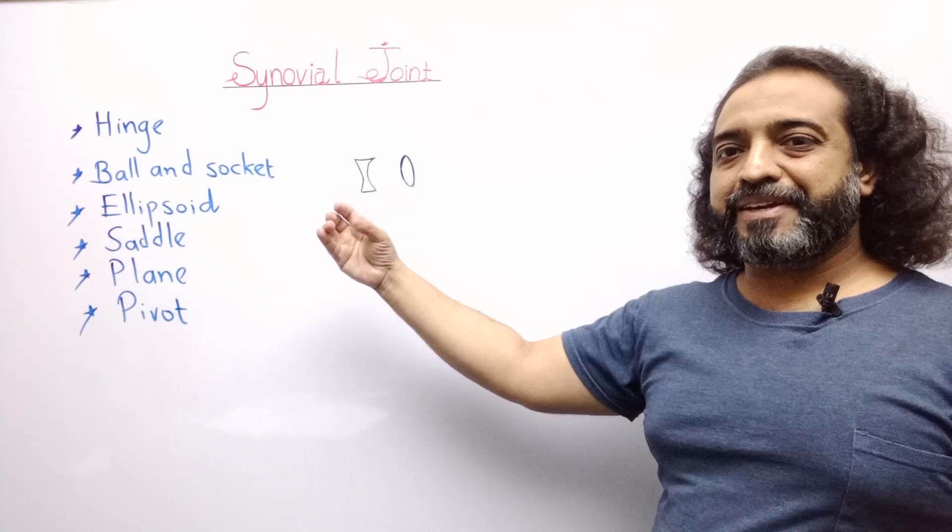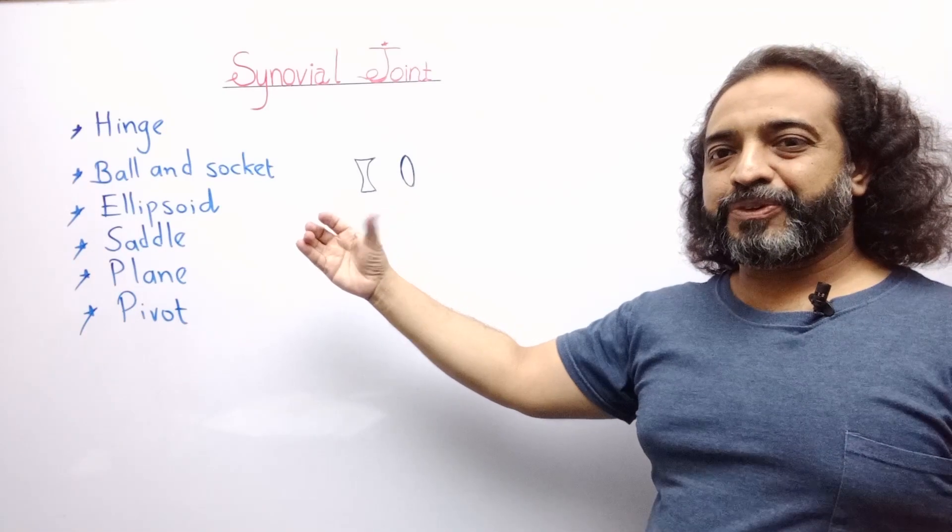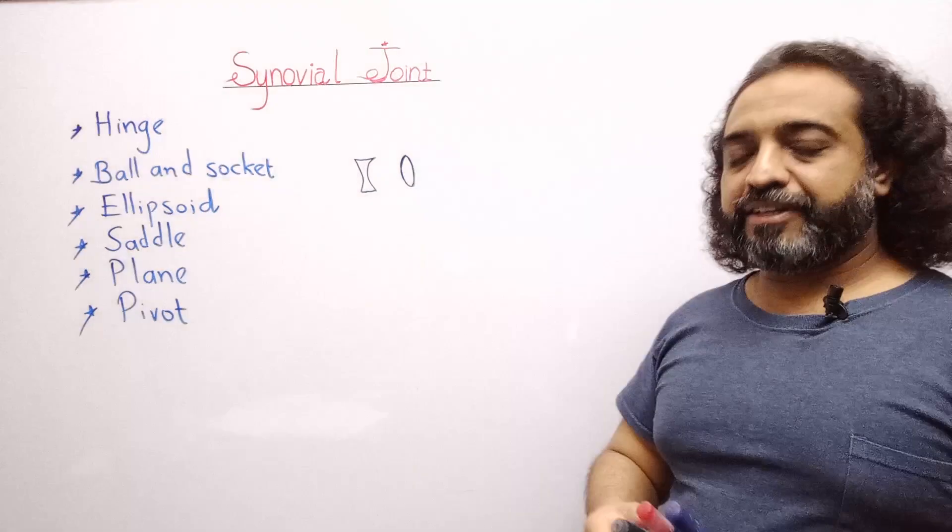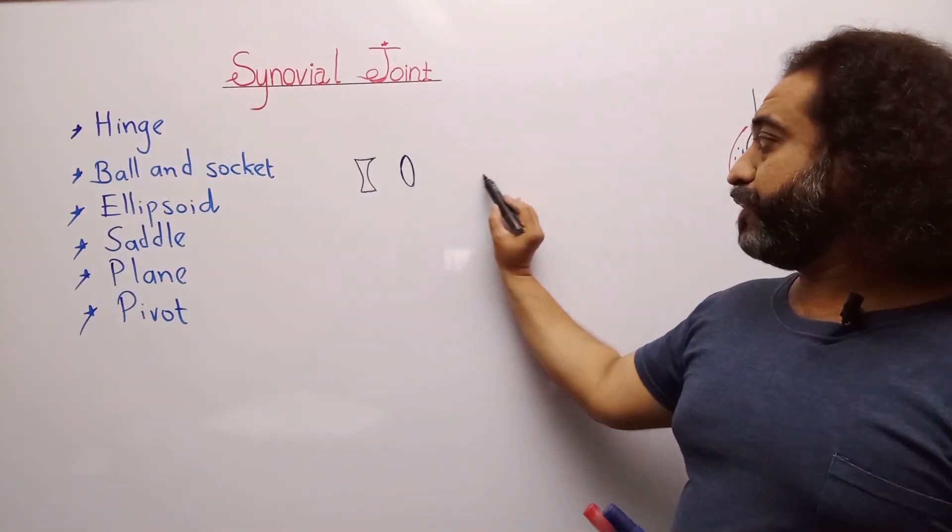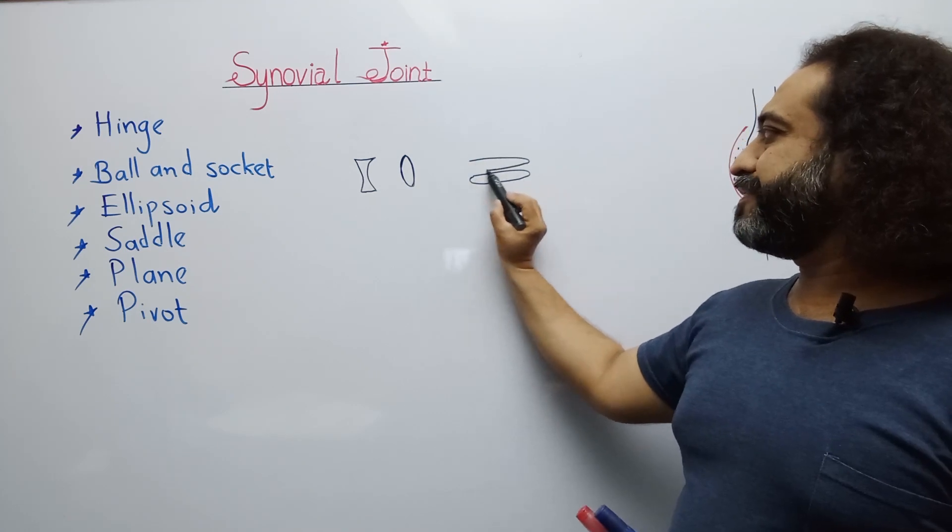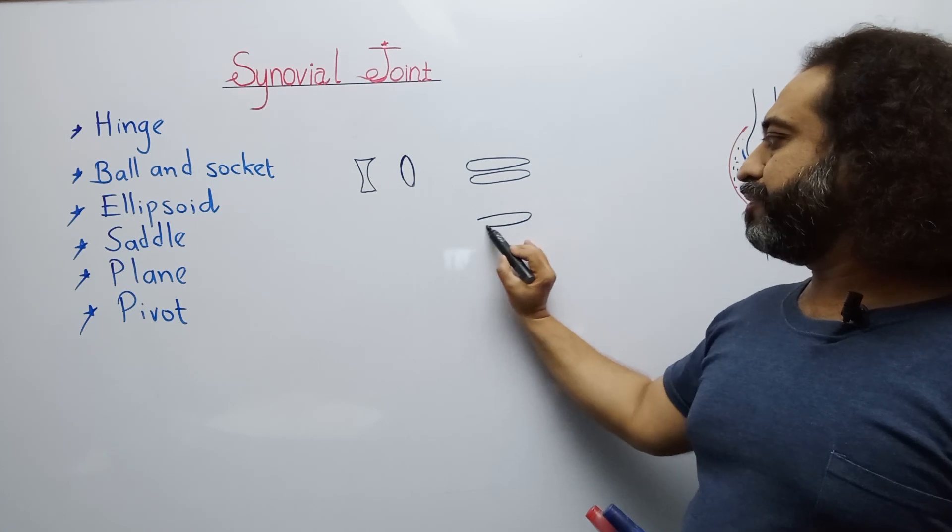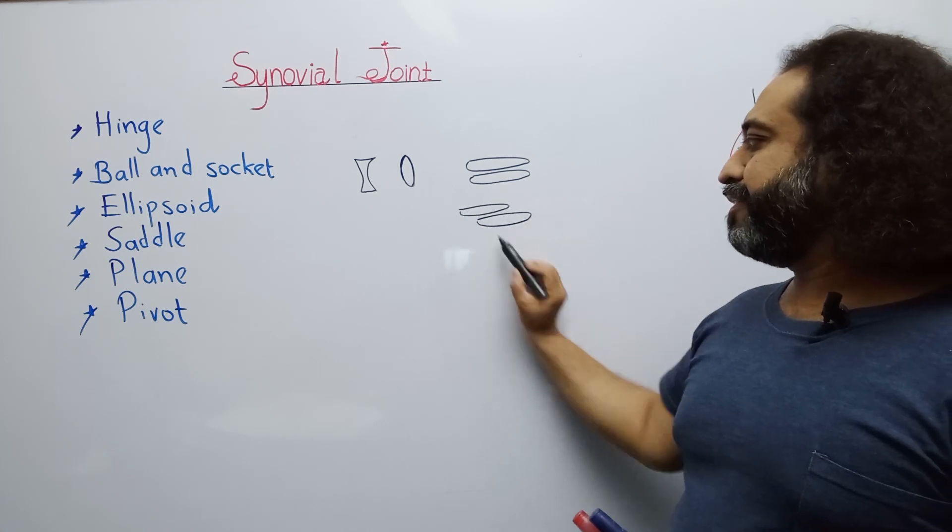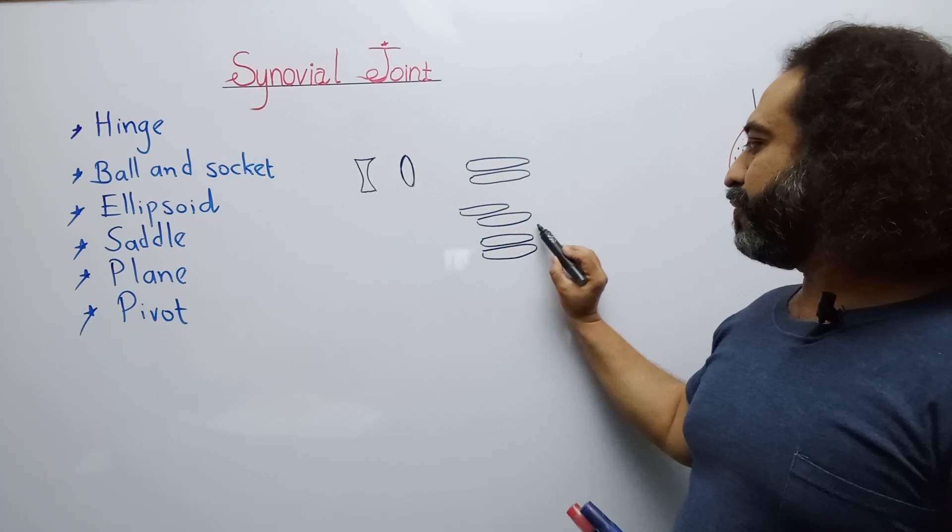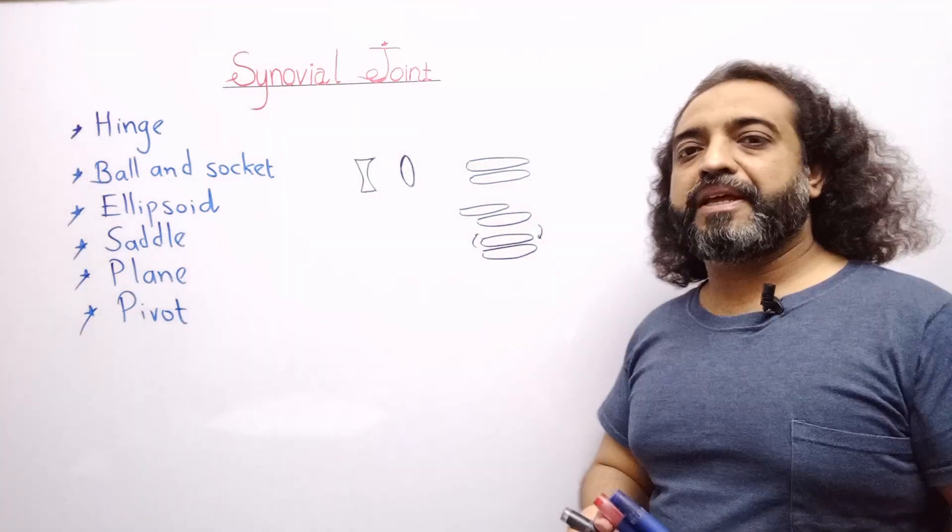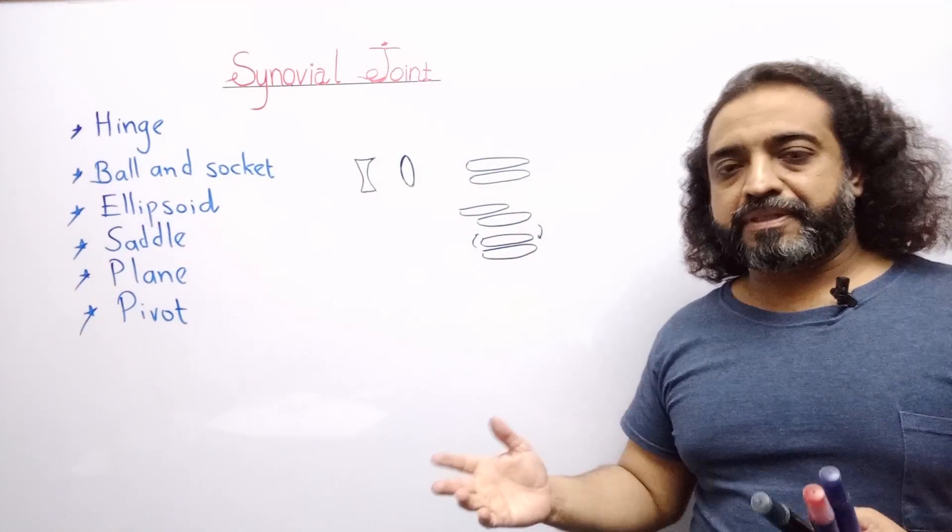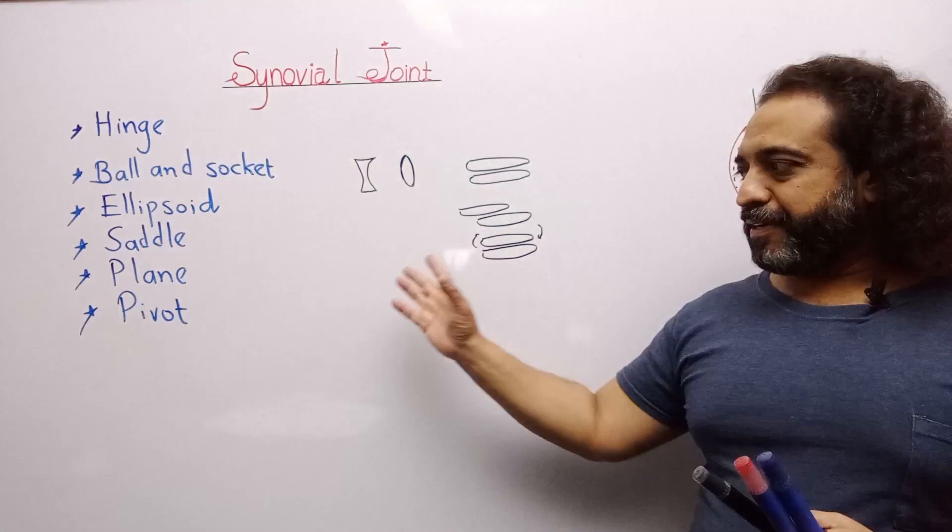Now there is the plane joint, or gliding joint. It is a very simple joint. It is just two plane surfaces on each other. They can move on each other or they can move as rotational movement. Such a joint is called a plane or gliding joint. These gliding joints are present in our carpals, between carpals, and between tarsals.